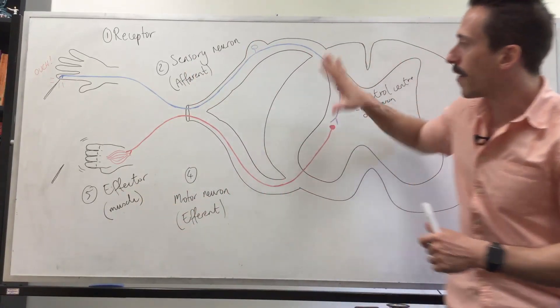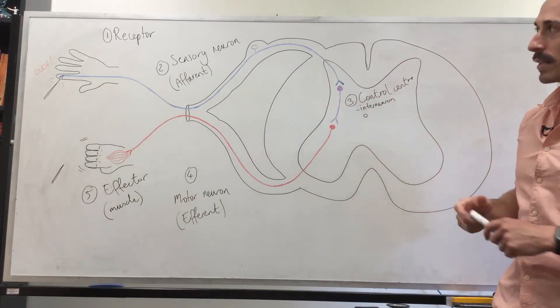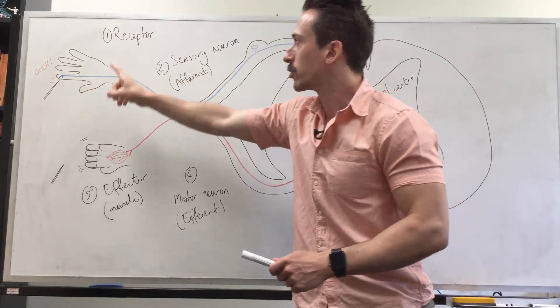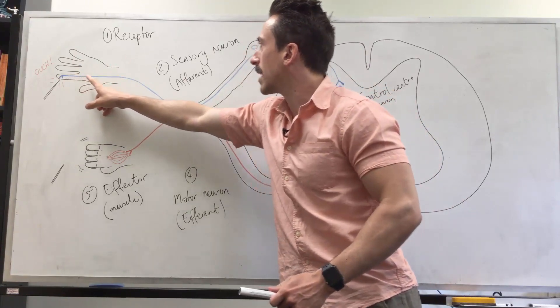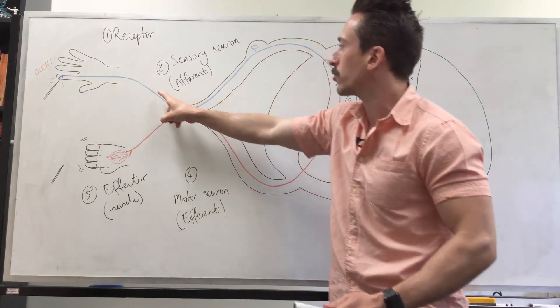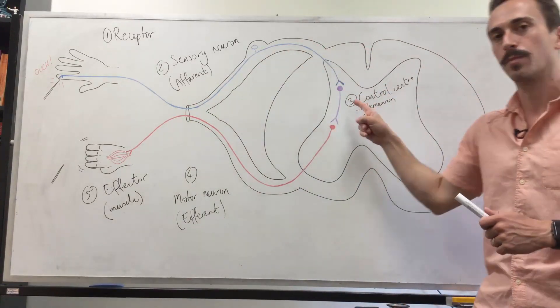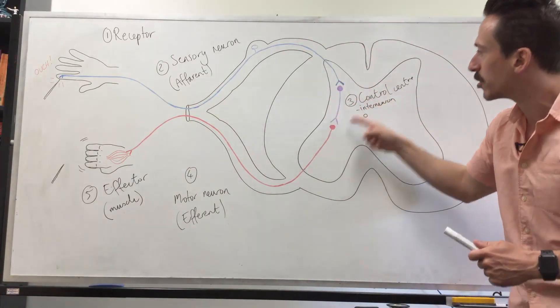So what you can see is the five steps of the reflex arc: the receptor picks up the stimulus, turns it into electrical energy, that then transmits down the second component which is the sensory neuron sending an afferent signal into the control center which is the spinal cord, specifically this interneuron.